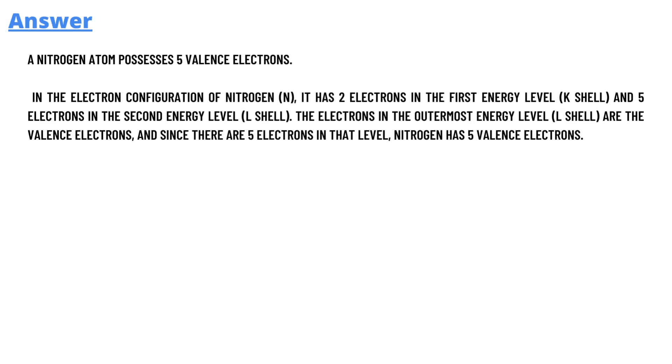The answer to the question is: A nitrogen atom possesses 5 valence electrons. In the electron configuration of nitrogen, it has 2 electrons in the first energy level and 5 electrons in the second energy level.